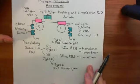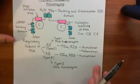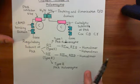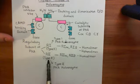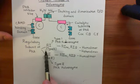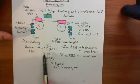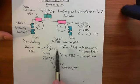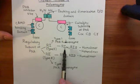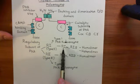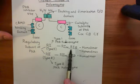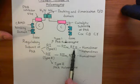There are four different regulatory subunits of protein kinase A divided up into two families: the type 1 regulatory subunits and the type 2 regulatory subunits. In the type 1 regulatory subunit family, you have the type 1 regulatory subunit alpha and the type 1 regulatory subunit beta.